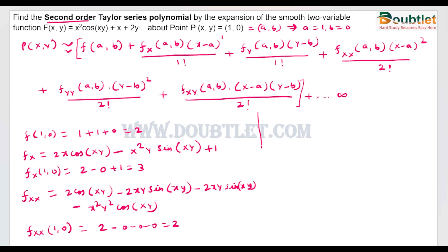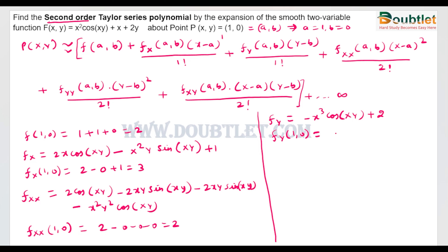Now we find the partial derivative with respect to y. Differentiating gives −x³·cos(xy) + 2y. To find the value at (1, 0), putting x = 1, y = 0 gives −1 + 2 = 1... so fy(1, 0) = −1.